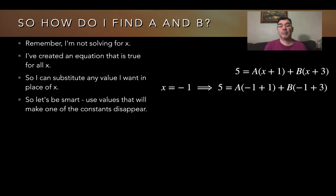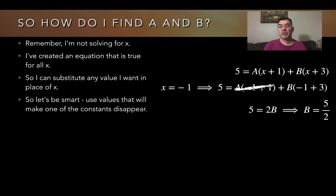I start by plugging in x equals negative 1. When I do that, the constant A is being multiplied by negative 1 plus 1, which is 0, making the A term completely go away. So now I'm just solving for B, and I get 5 equals 2B, which means B equals 5 over 2.